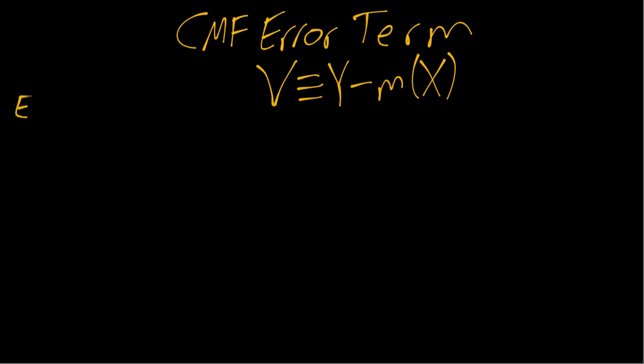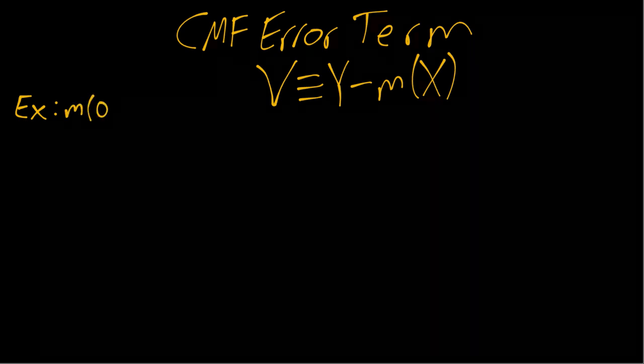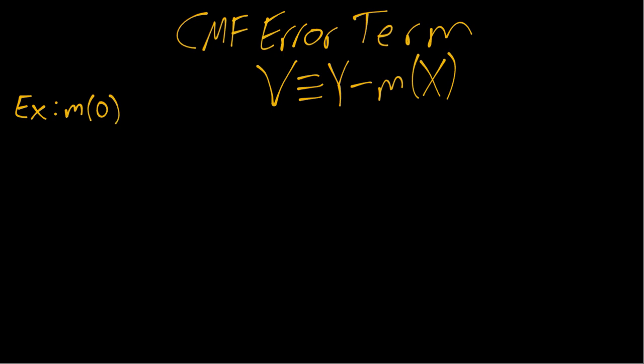So just to think about a concrete example, let's imagine using m for our conditional mean function. Imagine m of 0 is 0.2, m of 1 equals 0.3 and the marginal probability that x equals 1 is 0.6.